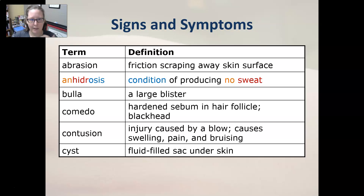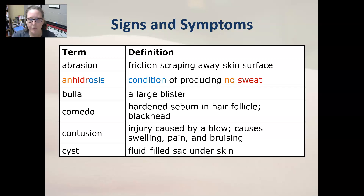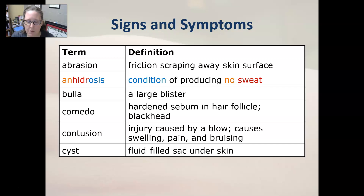Bulla is a large blister. Comedo is the hardened sebum in a hair follicle, also referred to as a blackhead. Contusion is an injury caused by a blow — it causes swelling, pain, and bruising. A cyst is a fluid-filled sac under the skin.